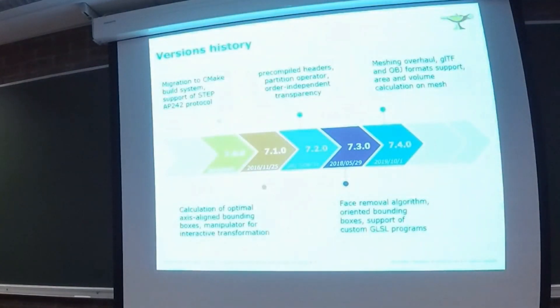Seven point three. A special algorithm for feature removal was added. This algorithm can remove features like gaps, holes, protrusions, fillets, chamfers. Also, this release introduces oriented bounding box. The idea is the same as an optimal bounding box. And once again, I have a demo for their functionality.